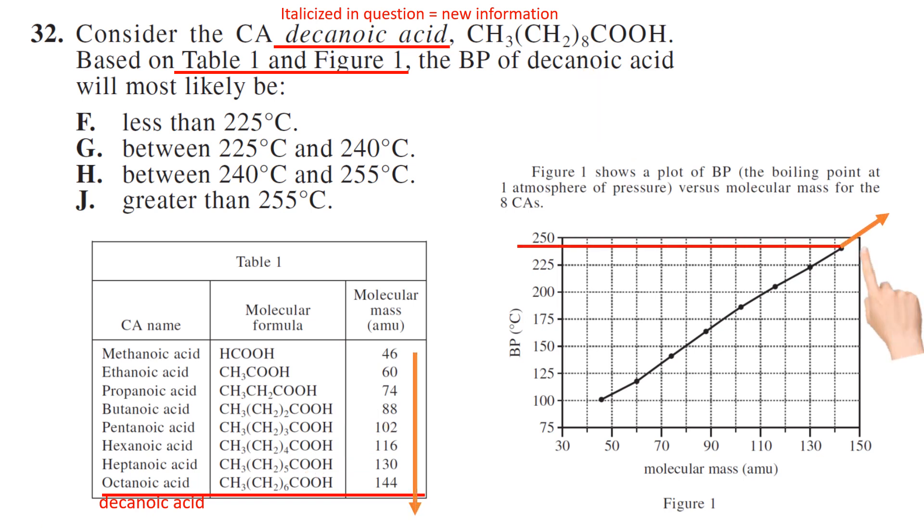And so we see our molecular mass continues to increase, which means if we follow the chart, it's going to continue to increase as well. So it's going to be greater than 255 because octanoic acid was right at 250 almost, just below it, 245. So greater than 255, J.